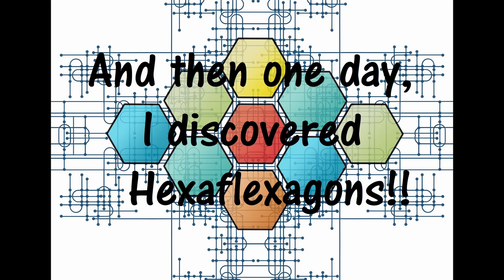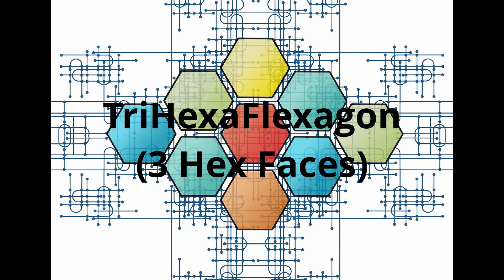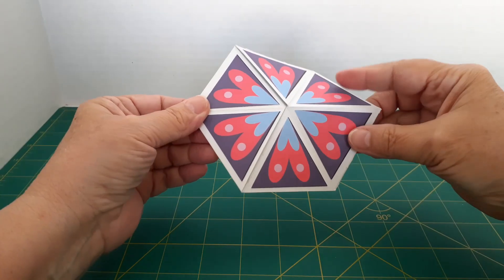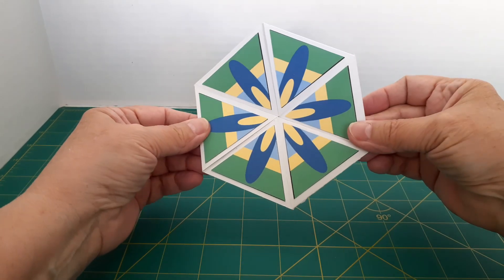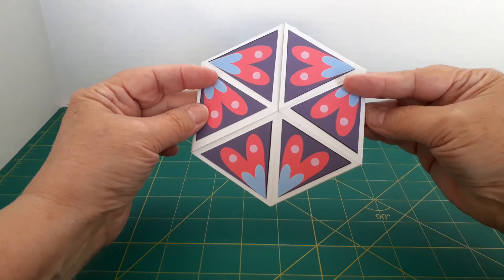This video is about hexaflexagons that I just discovered. I started out with a design from the Cricut store on Lori Whitlock and it's a trihexaflexagon which means it has three hexagonally shaped faces and they have three states each.